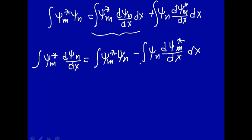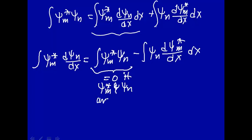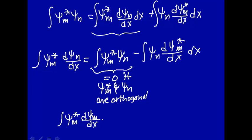Now, if you have an orthogonal basis set, then psi_m star times psi_n equals zero — they are orthogonal. And by the previous parts of this lecture, if they're not orthogonal, you can make them orthogonal. So this means the integral of psi_m star d psi_n dx equals minus the integral of psi_n d psi_m star dx.